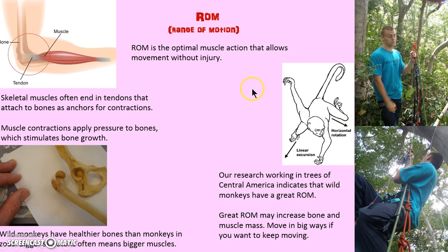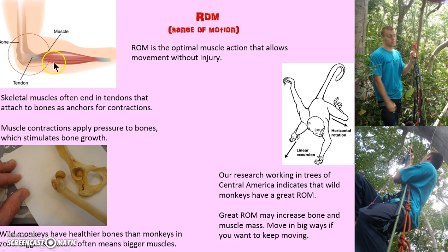Range of motion, ROM — that is the optimal muscle angle or action that allows movement without injury. We need wide ROM because the muscle is tied to the bone via tendon, and when the muscle contracts, it helps stimulate bone growth. We found that in our studies with monkeys.